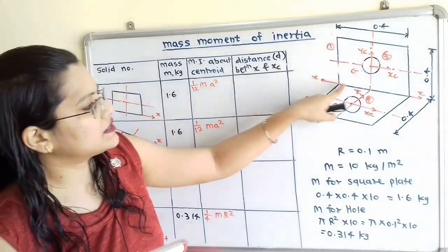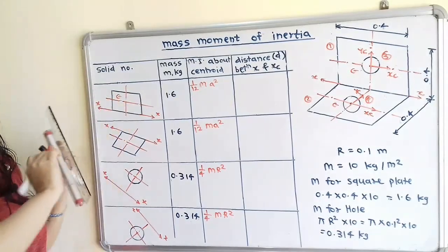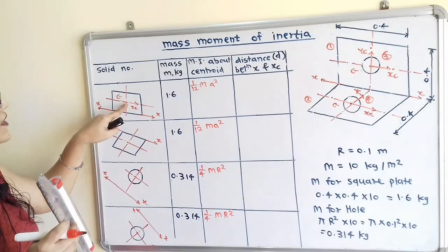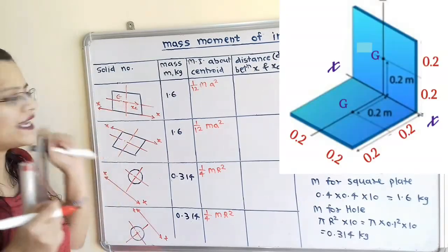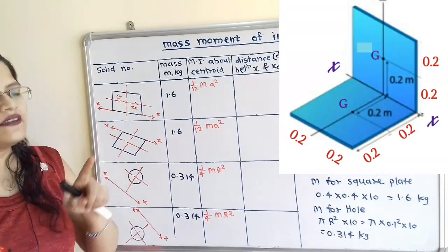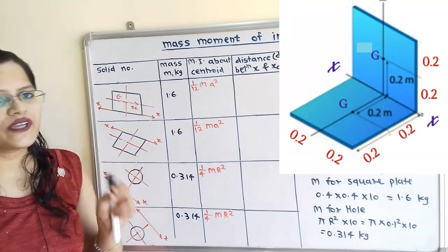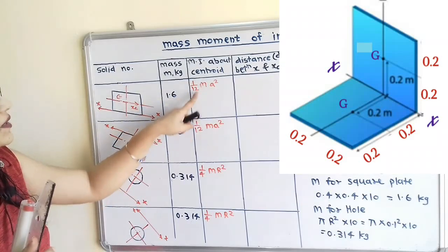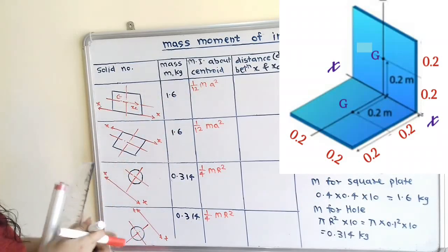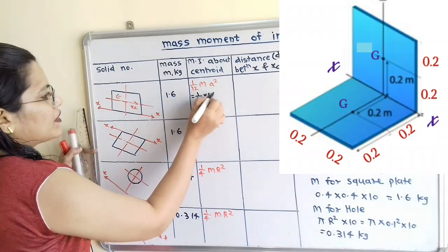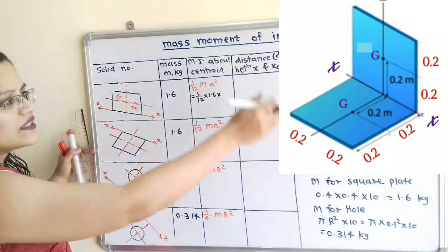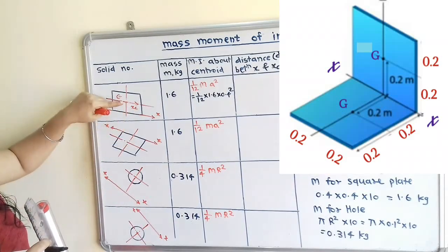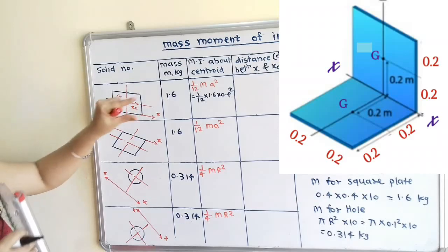For shape number 1, the square plate, we use the formula for moment of inertia about the centroidal axis: IXC = (1/12) MA². Each side of the square plate equals A = 0.4. So IXC = (1/12) × 1.6 × (0.4)². The distance between X and XC is the middle point of one side, which is 0.2.